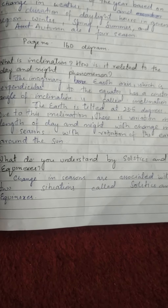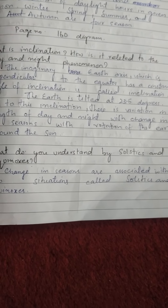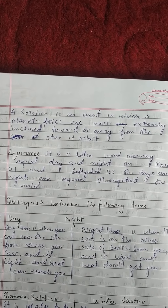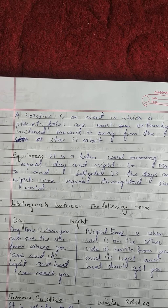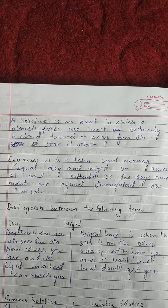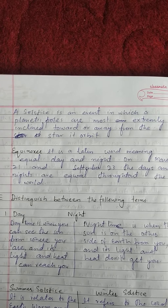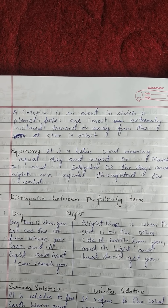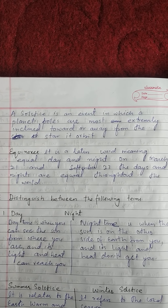Change in seasons are associated with two situations, called solstices and equinoxes, which are responsible for change in season. A solstice is an event in which a planet is most extremely inclined toward or away from the star it orbits. Equinox is a Latin word meaning equal day and night, which means equal length of day and night. On March 21st and September 23rd, the days and nights are equal throughout the world.